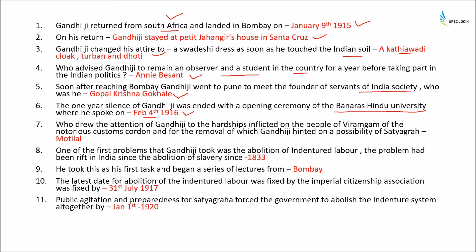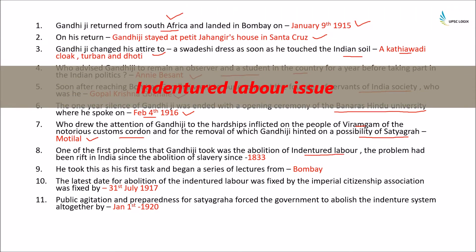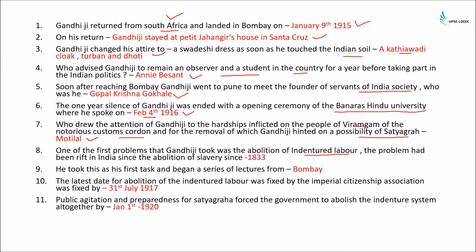Gandhiji's attention was drawn towards the hardships inflicted on the people of Virgram because of the notorious custom cordon, for the removal of which he hinted at the possibility of Satyagraha. His attention was drawn to this problem by Motilal Nehru. The first problem Gandhiji took up was the abolition of indentured labour, which had existed in India since the abolition of slavery in 1833. He then began a series of lectures in Bombay.